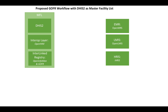Here we start with the master facility list, which is really comprised of DHIS2 where the management of organization units provides the management interface for the master facility list. We combine that with an interoperability layer to handle data transformation and synchronization services, as well as the interlinked registry, which provides a standards-based interface for accessing health facility data based on HL7 FHIR. On the right-hand side, we see several potential systems deployed within a country that will have lists of health facilities needing to be synchronized with the master facility list.